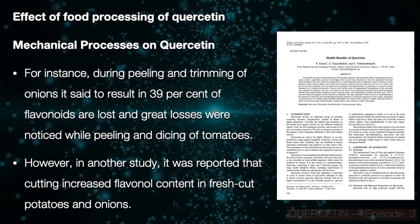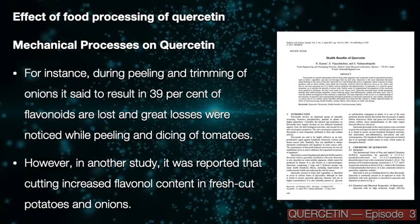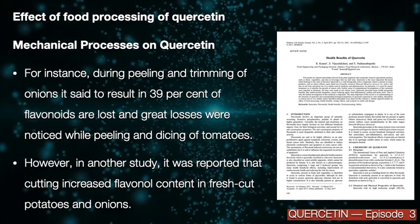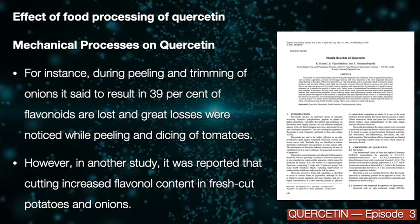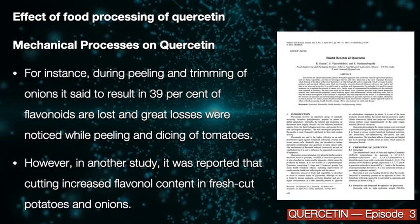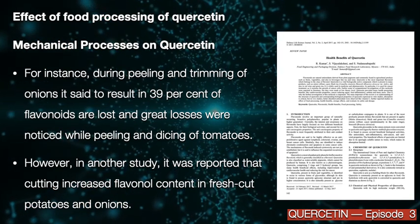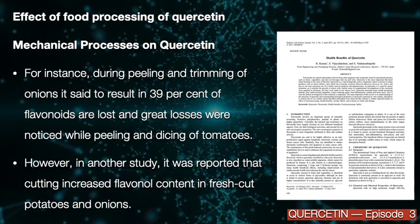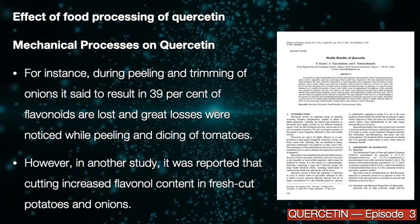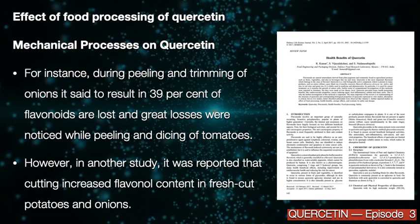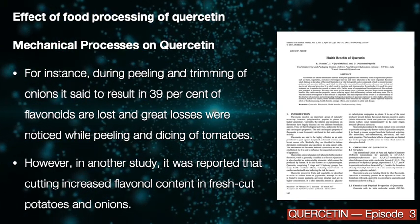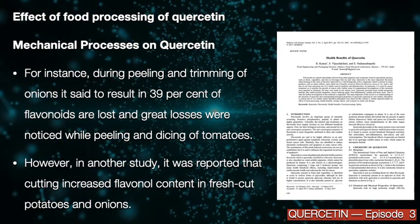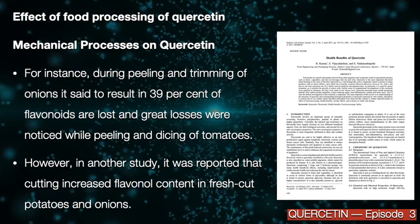For instance, during peeling and trimming of onions, which contain quercetin, it is said to result in a 39% loss of flavonoids, and greater losses were noticed while peeling and dicing of tomatoes.